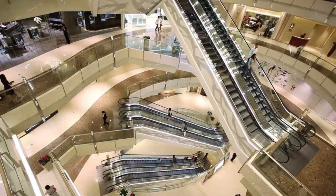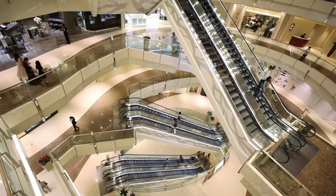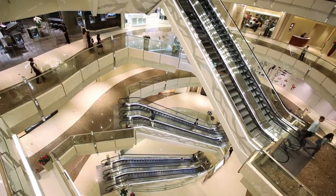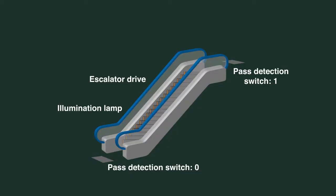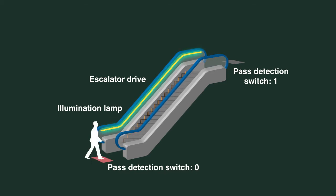Let's program the PLC to control an escalator as an example. First, I'll explain the control specifications. There are two sensors — one at the entrance and one at the exit. If the sensor at the entrance is turned on, a lamp will turn on and the escalator, which was stopped, will start moving.